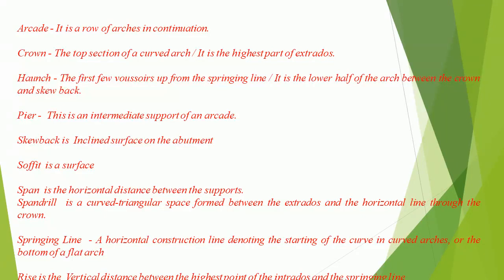Soffit is the surface of an arch. Span is the horizontal distance between the supports. Spandrel is a curved triangular space formed between the extradose and the horizontal line through the crown. Springing line is a horizontal construction line denoting the starting of the curve in curved arches, or the bottom of a flat arch. Rise is the vertical distance between the highest point of the intrados and the springing line.